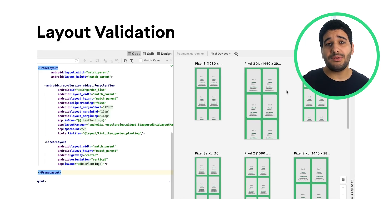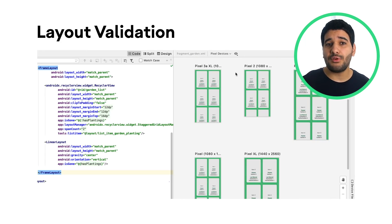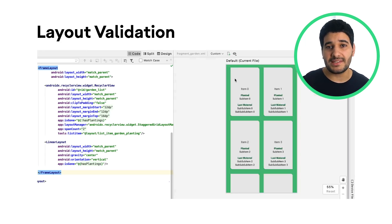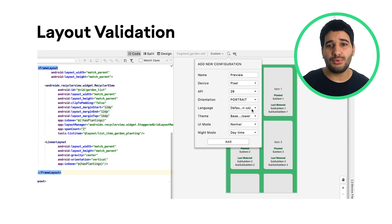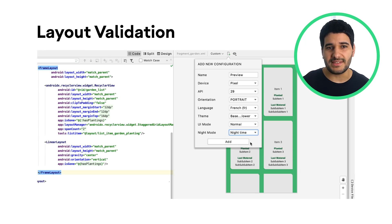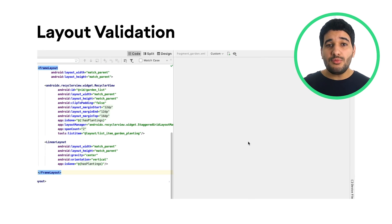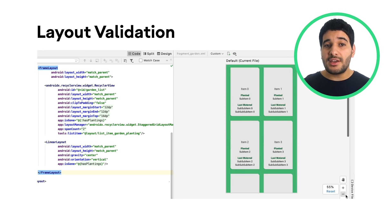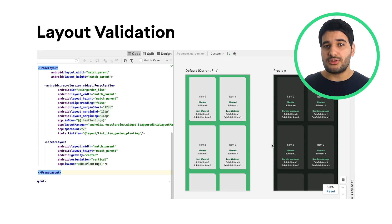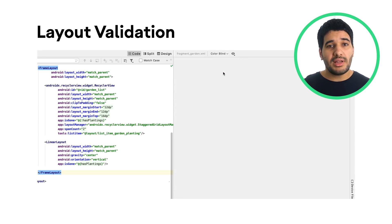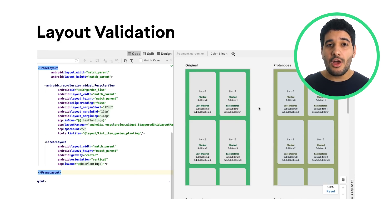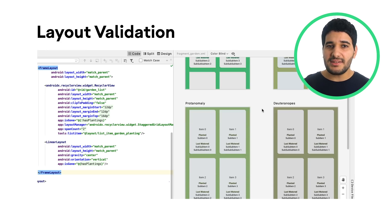In the layout validation window, you can select from four different configuration sets, including pixel devices where you can preview your app on a selection of pixel devices, and custom where you can preview your app using custom display options such as screen orientation or language.